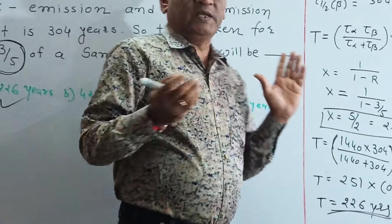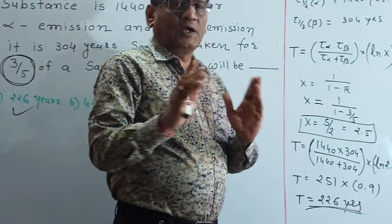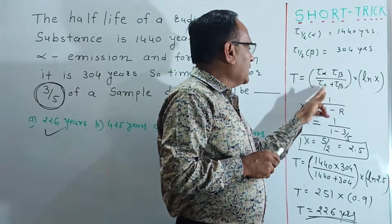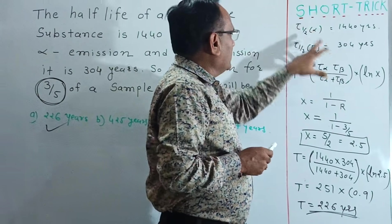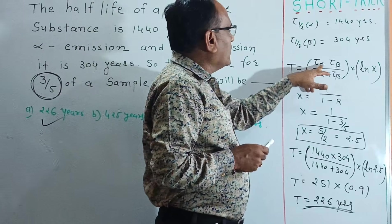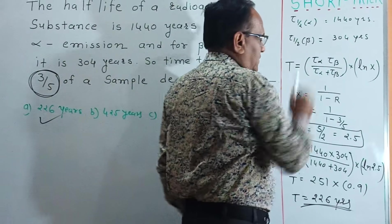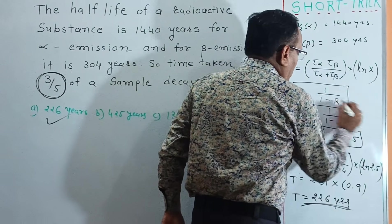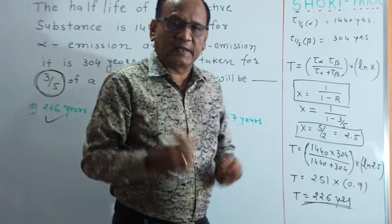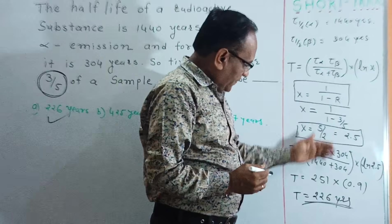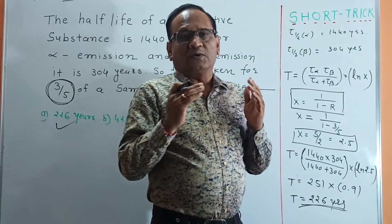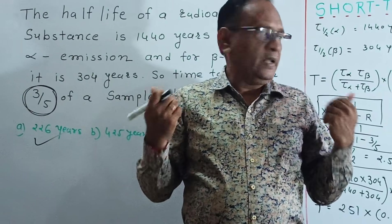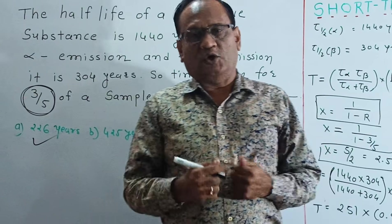So it is very easy to solve for all types of students. The formula is: t equals (t-half-alpha times t-half-beta) divided by (t-half-alpha plus t-half-beta) times ln(x), where x equals 1/(1 minus r). I have put many videos with shortcut tricks — please search Dharmendra Patel Physics or Dharmendra Patel Maths to find more shortcut tricks.